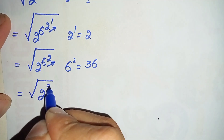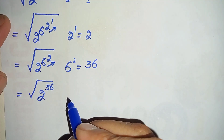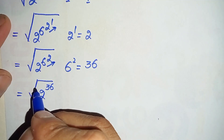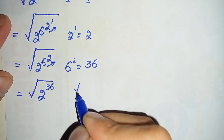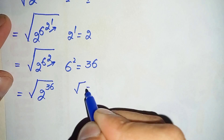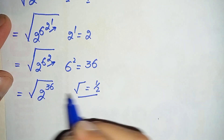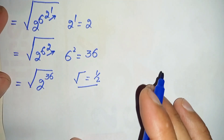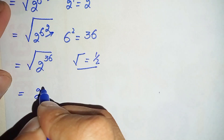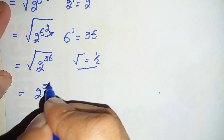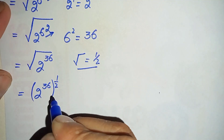This becomes the square root of 2 raised to power 36. Now we will change this square root to its equivalent fraction value 1 over 2, because we know that the square root symbol is equal to raising to the power of 1/2. So we replace the square root with this value.